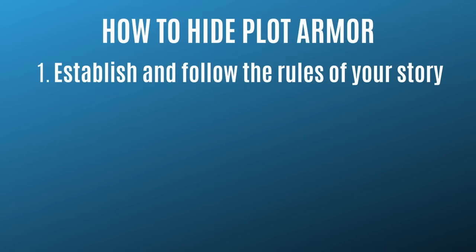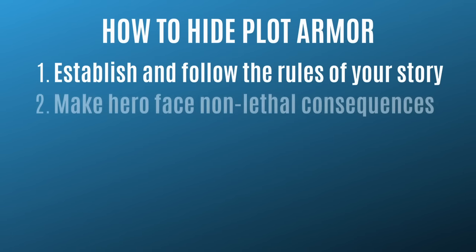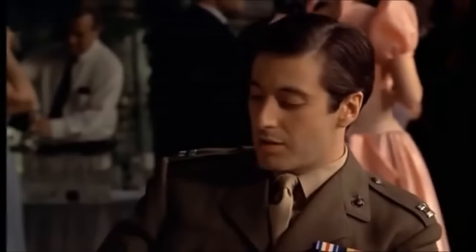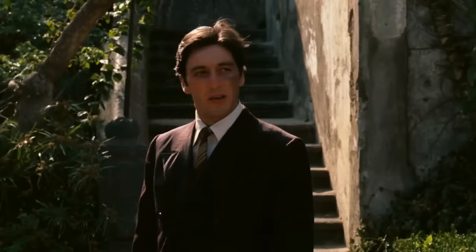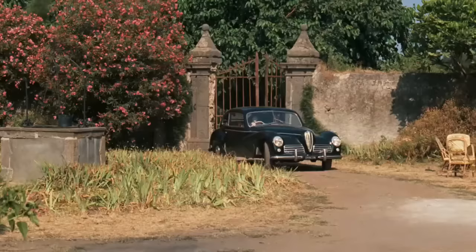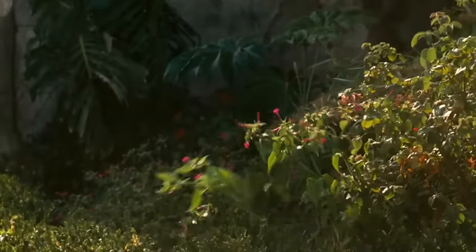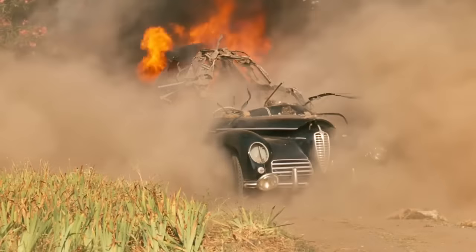Tip number two: if your hero can't die, make them face other consequences — find other ways to hurt them. This may involve harming or killing secondary characters, or pushing your main character away from their goals, or forcing them to face personal failure. In the Godfather movies, Michael Corleone cannot be killed — he's too important to the plot. But he suffers in other ways, whether it's the death of family members, the loss of his wife's love, or the loss of his own humanity.